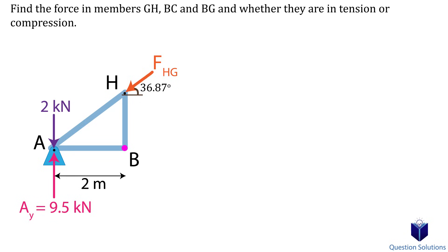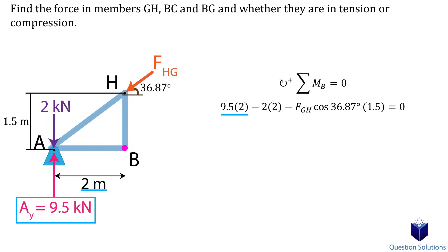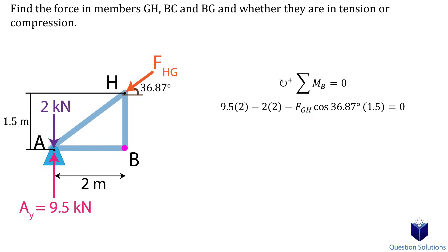Let's start with the moment equation about point B. That eliminates forces BC and BG, and also eliminates the 5 kN force since its line of action goes through point B. Force in member AH is an internal force so we don't need to worry about it. This leaves just force HG and the reaction at A. We also need the height, found using the earlier angle, giving us 1.5 meters. We pick clockwise as positive, then include the vertical reaction at A times its perpendicular distance, the applied force times its distance (counterclockwise, so negative), and the x-component of force HG times its perpendicular distance.